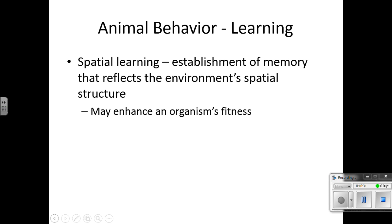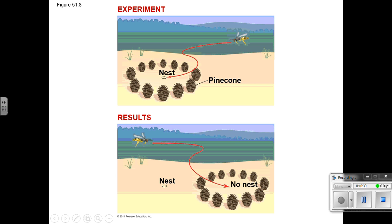Spatial learning is the establishment of memory that reflects the environment's spatial structure. In an experiment with bees and their nest surrounded by pinecone trees, when researchers moved the trees, the bees would go back to the center of where the trees had been rather than to the nest itself, because they associated their nest with the spatial arrangement of those trees.